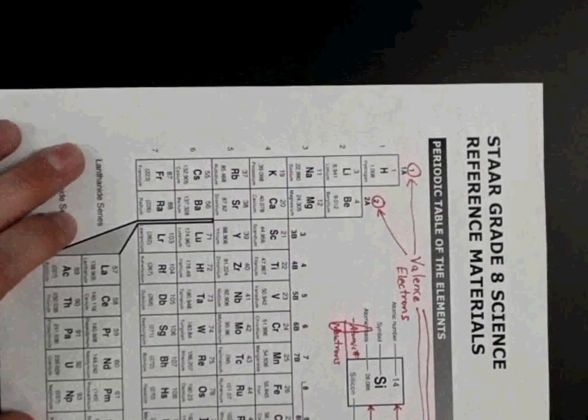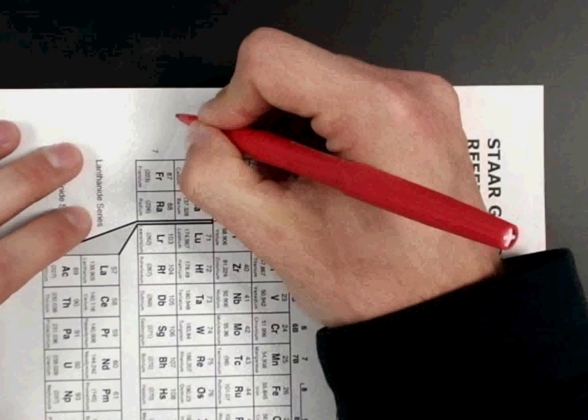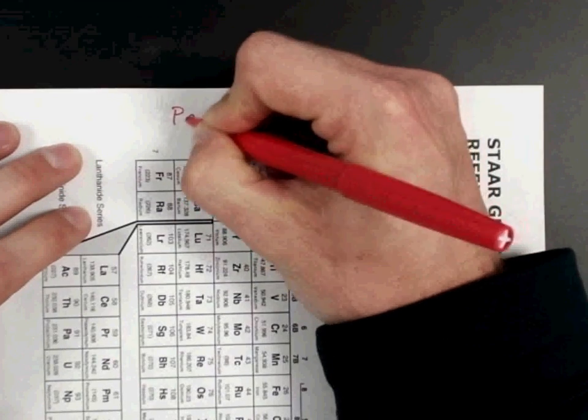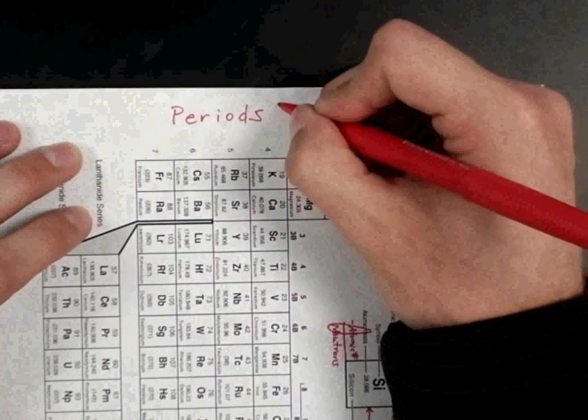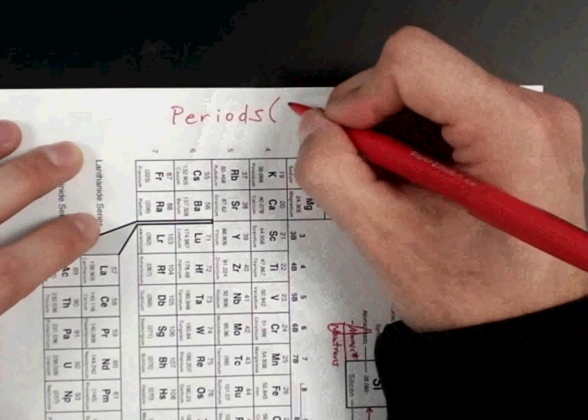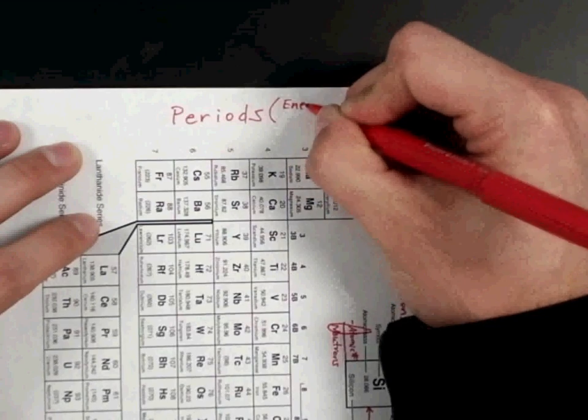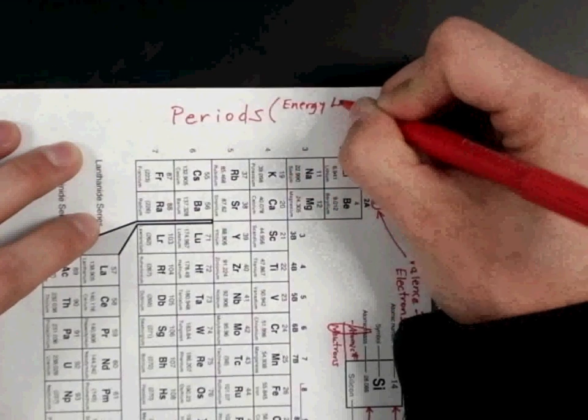They tell us the number of energy levels, or they tell us the number of energy shells in an actual Bohr model. So I'm always going to label periods across the side here, and I'll put in parentheses energy levels and energy shells.